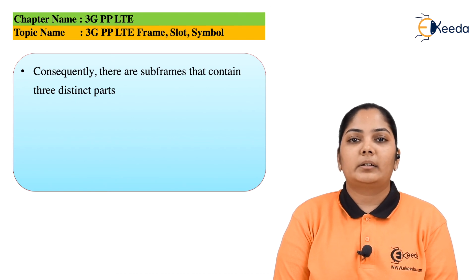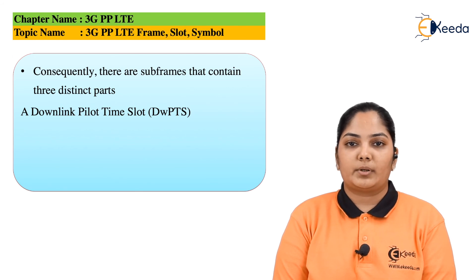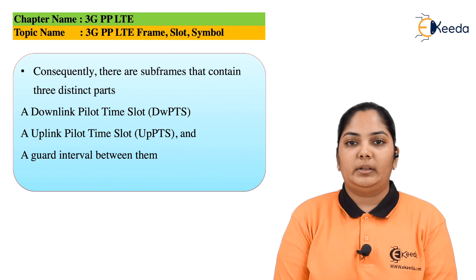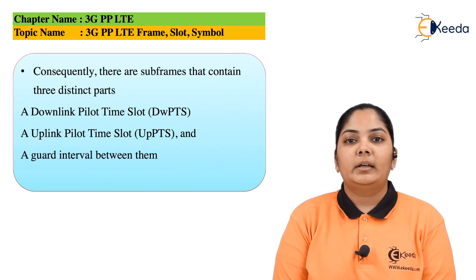Consequently, there are subframes that are containing three distinct parts: the first one is the downlink pilot time slot, uplink pilot time slot, and guard intervals between them. So this is how the data has been transmitted using TDD and FDD.